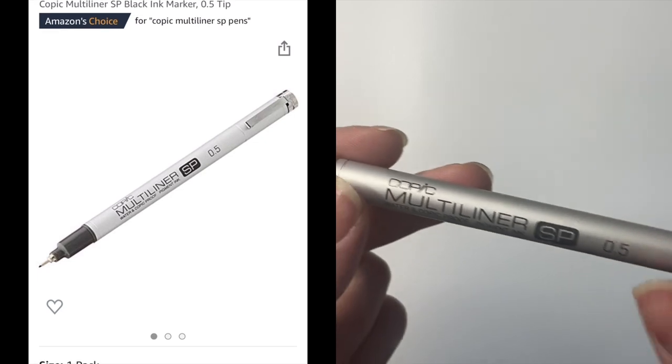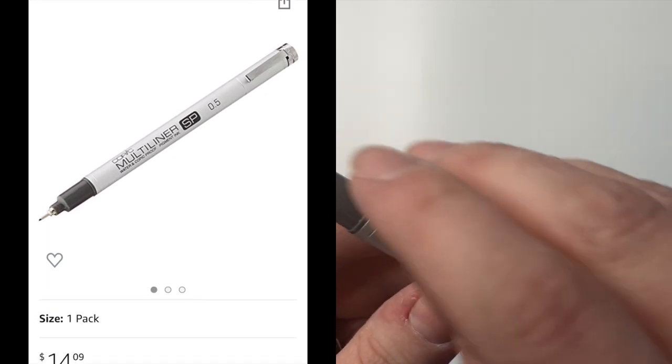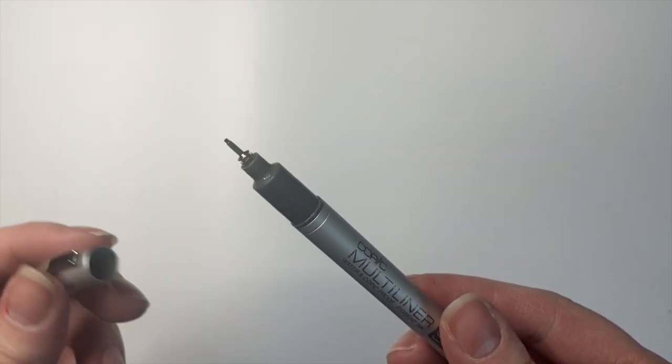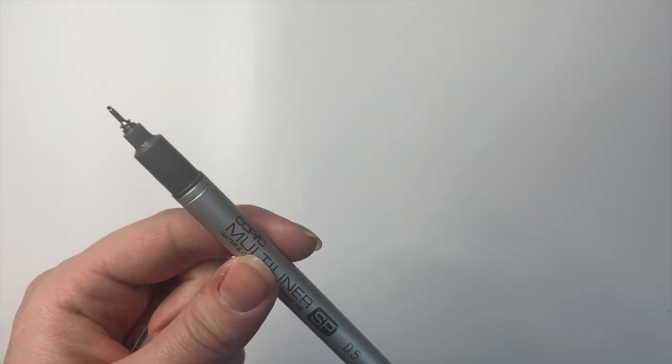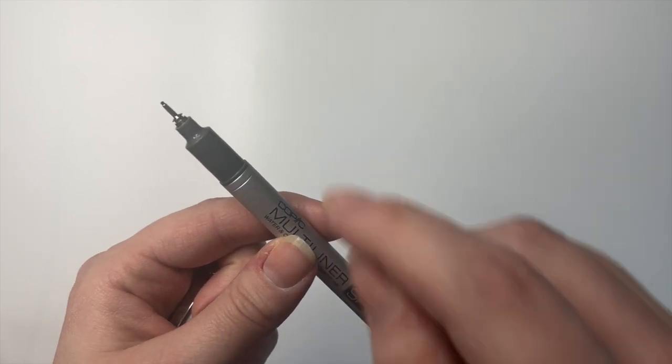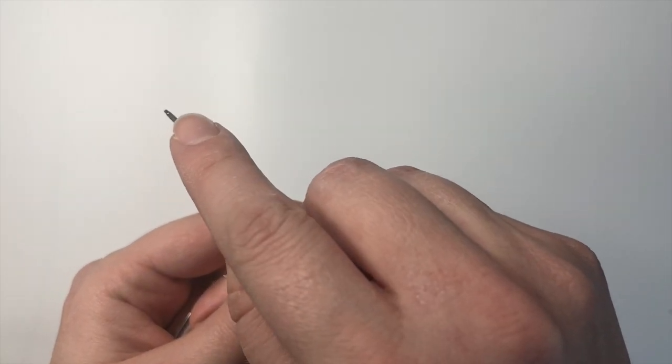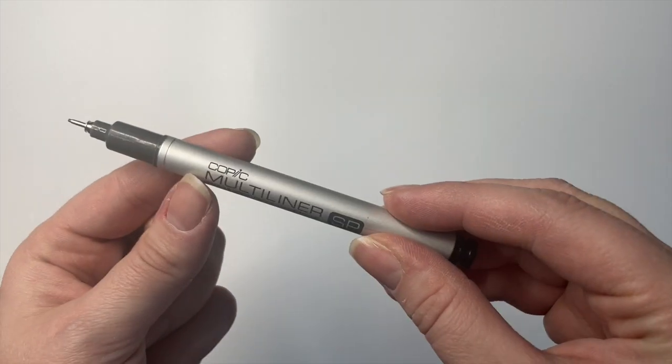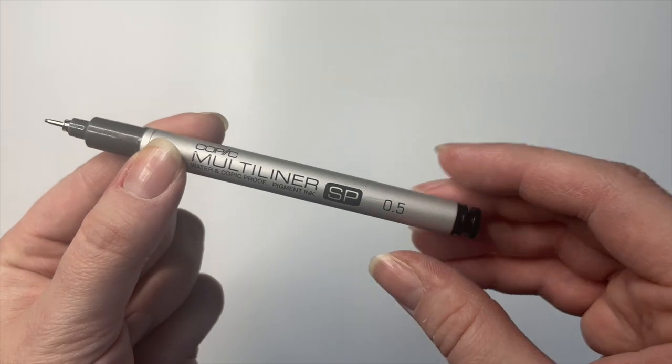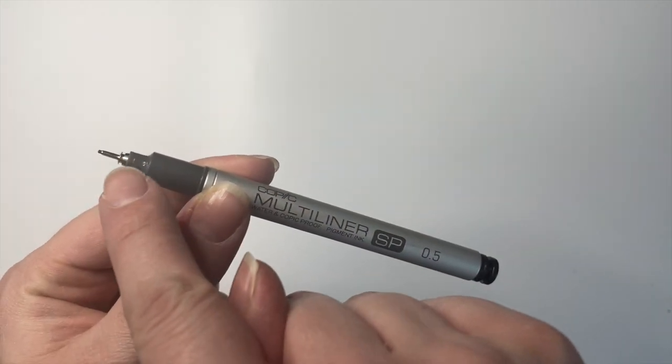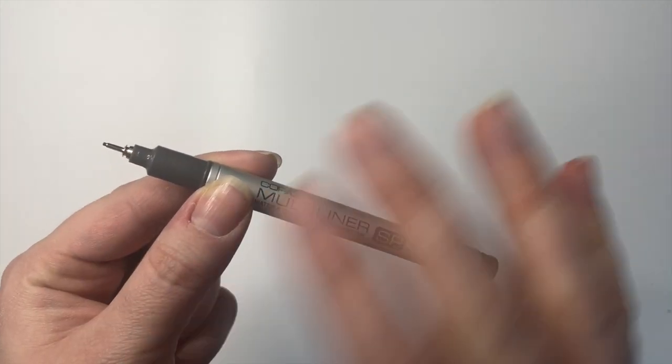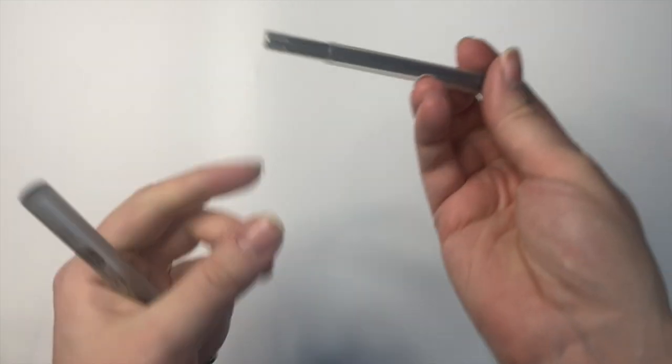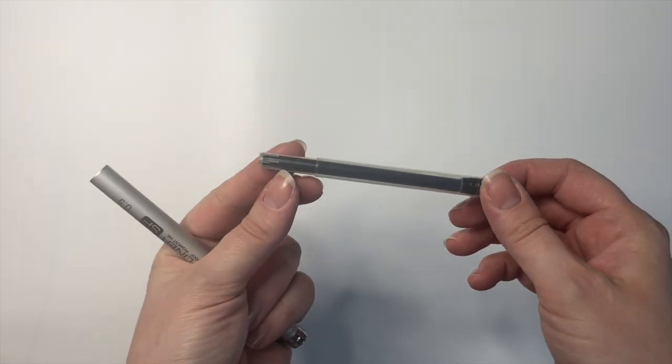One thing I really like about this is that the tip is really resilient. If you're somebody who's used Sharpie pens a lot, you'll know that if you're a heavy handed writer, and I am, the felt tip of the pen will get worn down over time with a Sharpie marker. But with this one, it is a little more expensive, but the tip holds up much, much better.